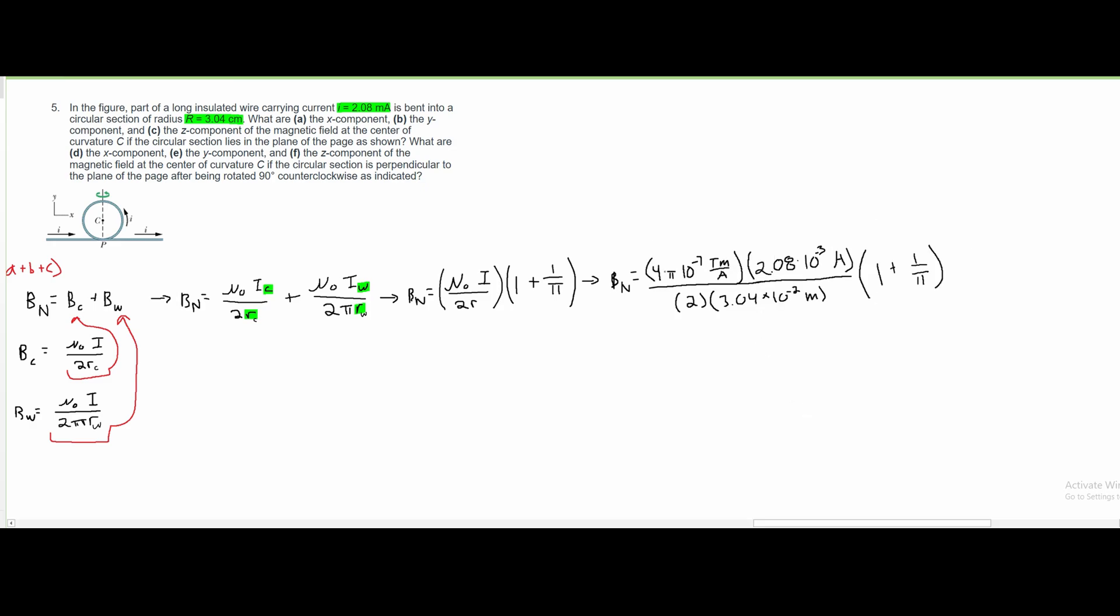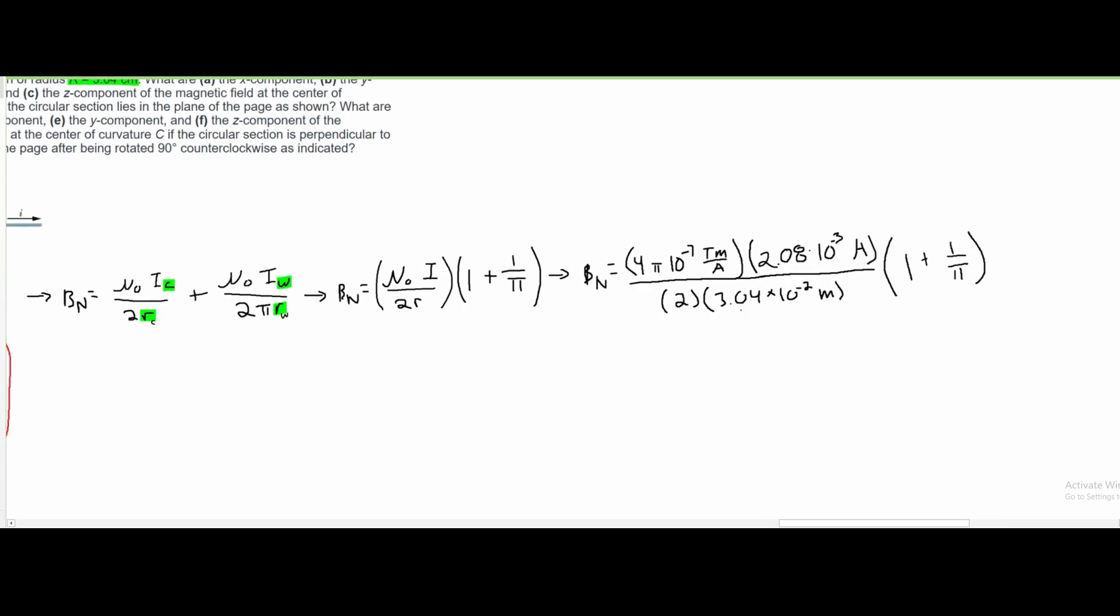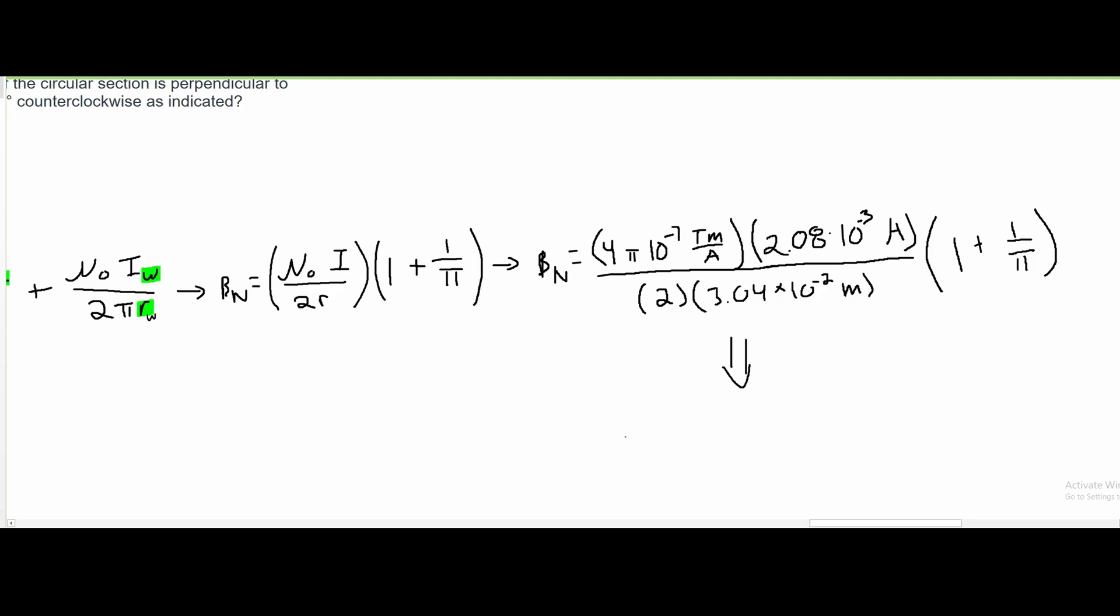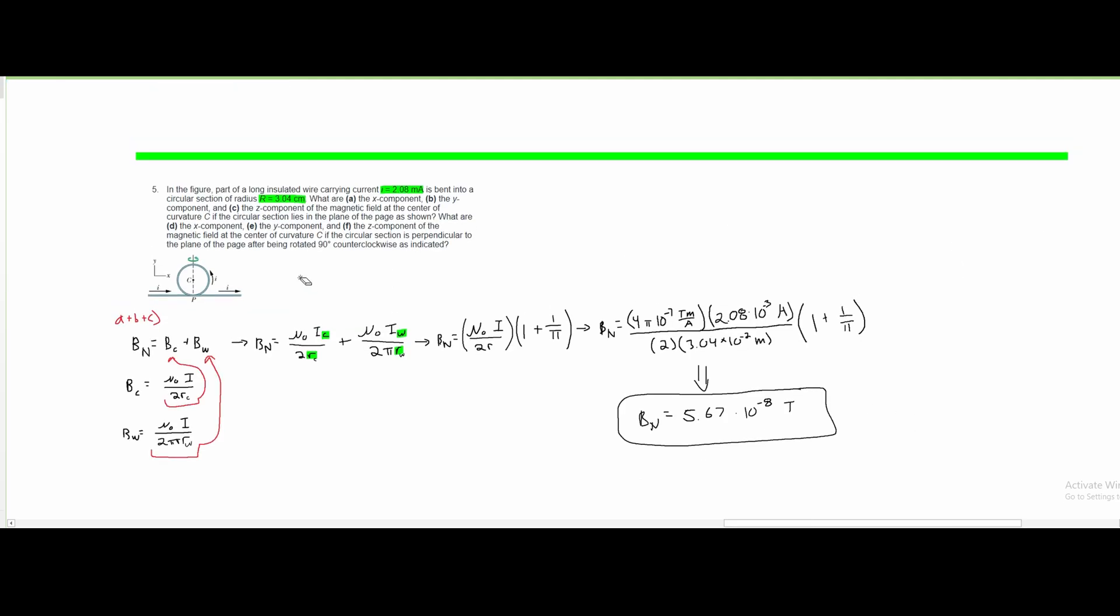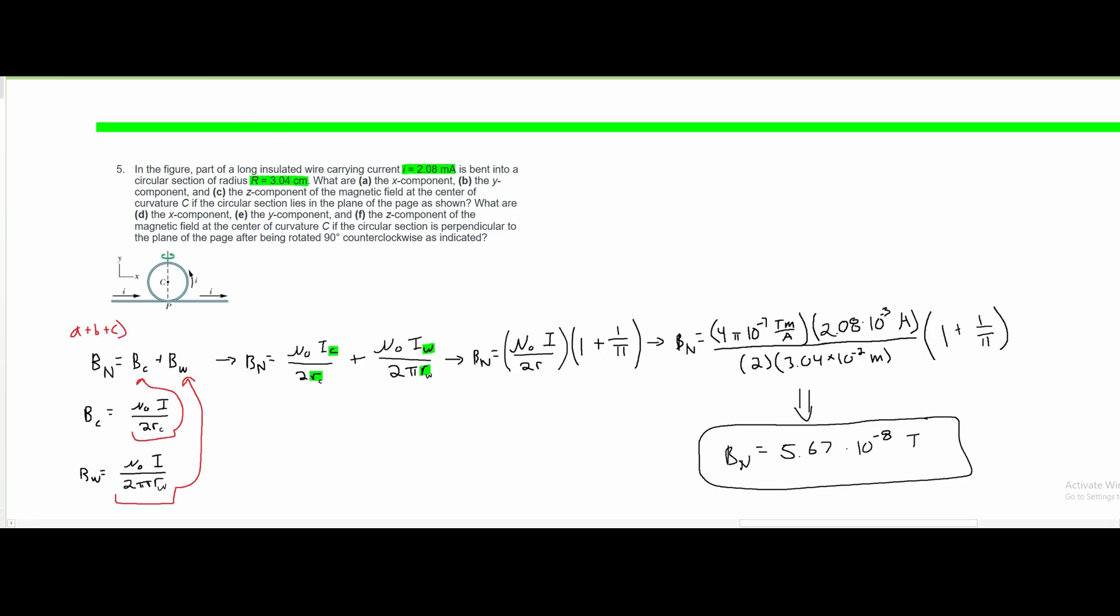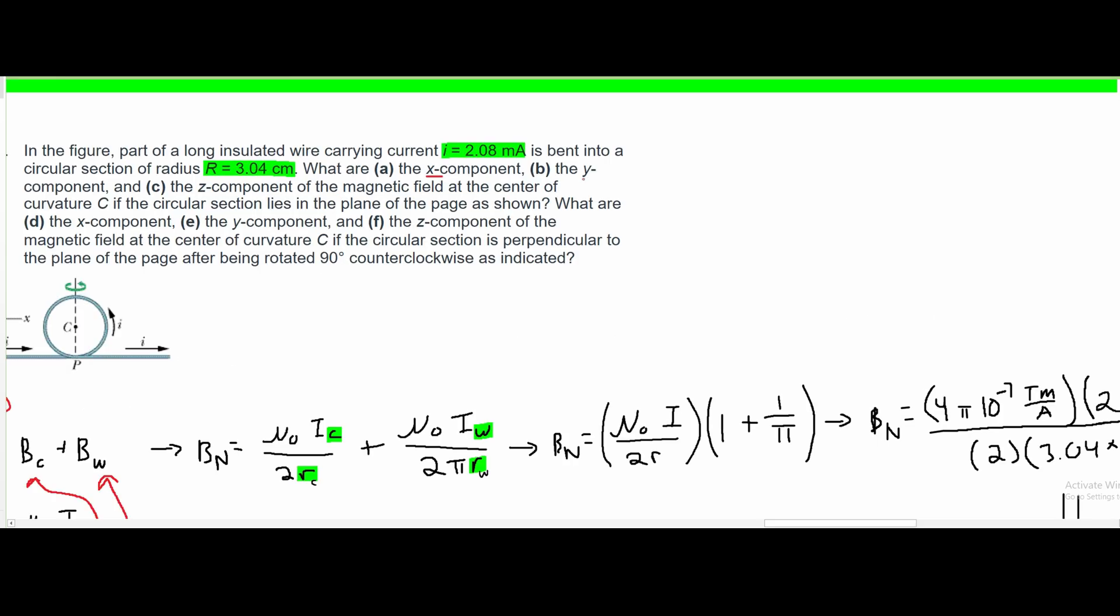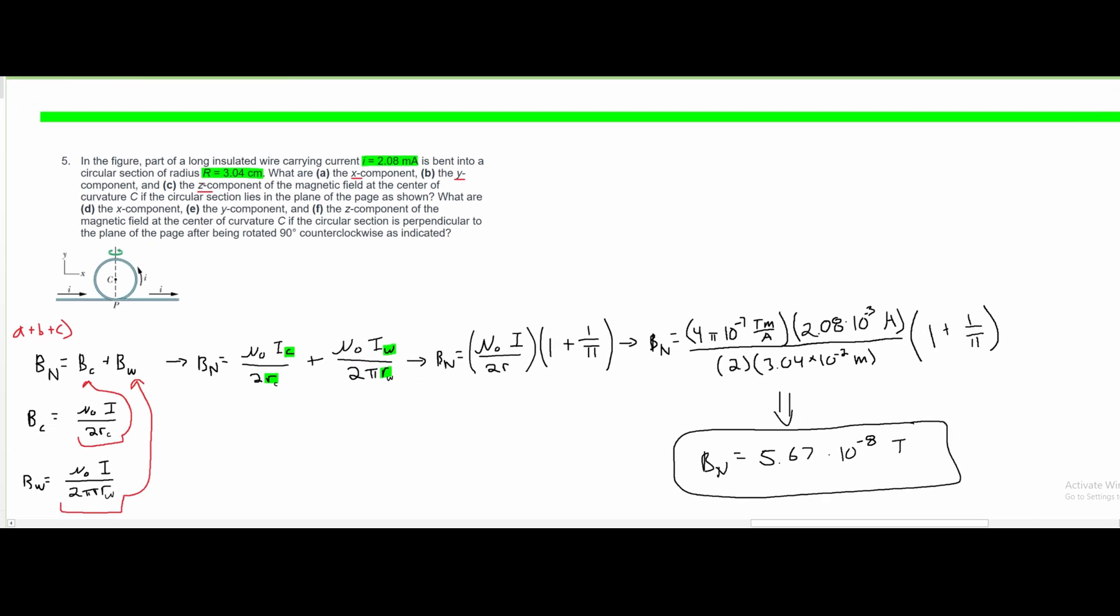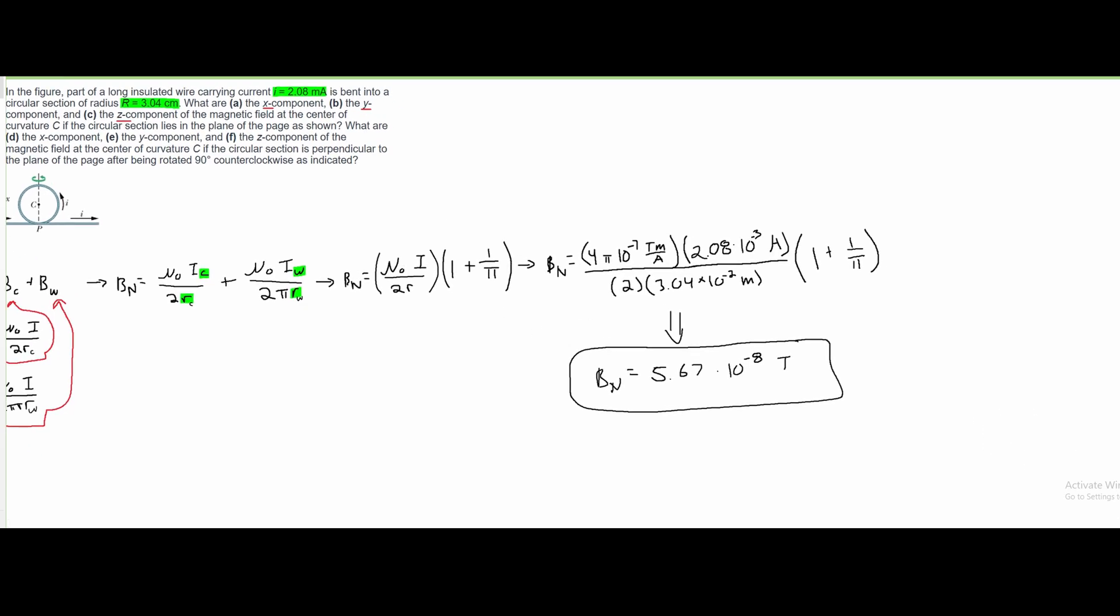And this is just being multiplied to 1 plus 1 over π. After we carefully plug all of this into a calculator, we are going to get that our B net is equal to approximately 5.67 times 10 to the negative 8 teslas. However, we are dealing with x components, y components, and z components. So this is not our full answer.